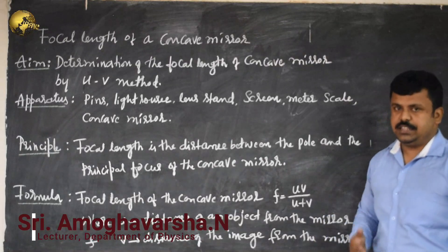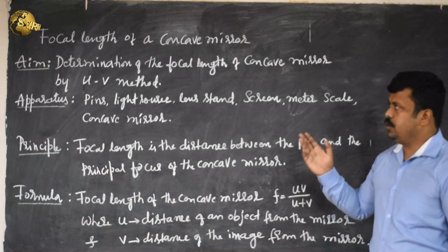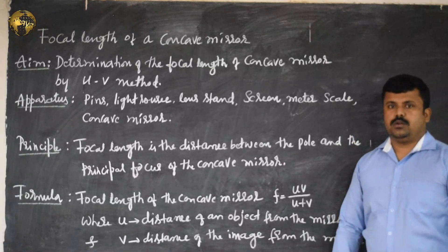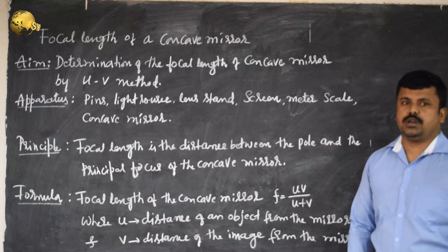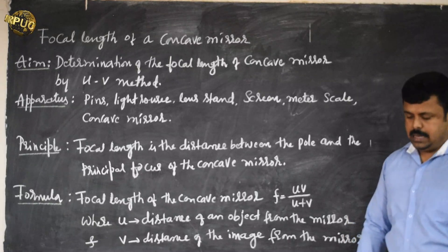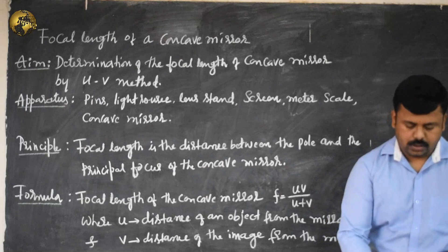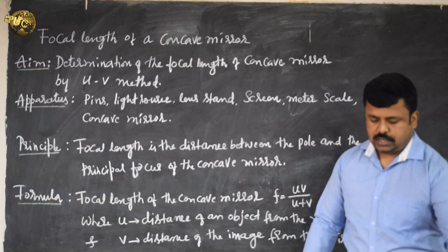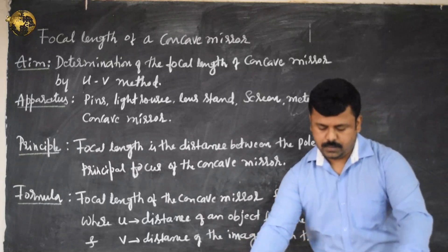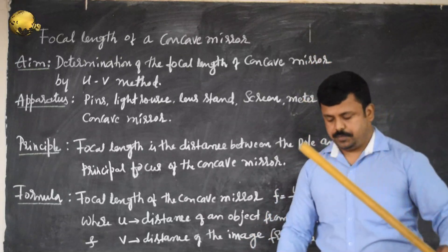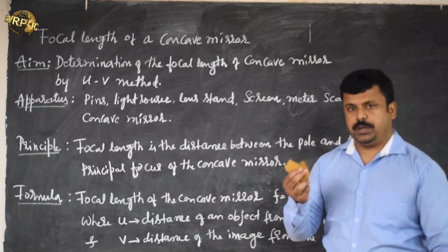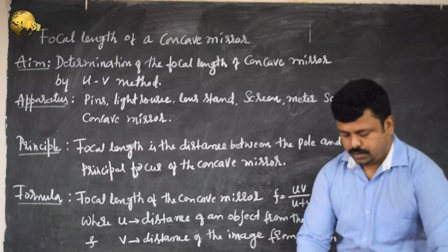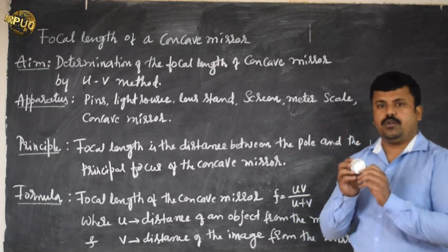Welcome once again. In this session we are going to find out the focal length of a concave mirror. To find that, I am making use of the UV method. The apparatus used are a light source, screen, meter scale, object pin, mirror holder, and concave mirror.